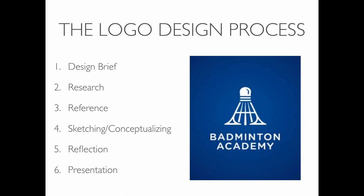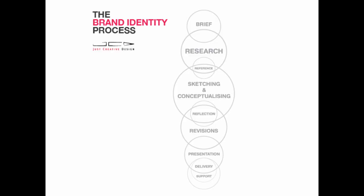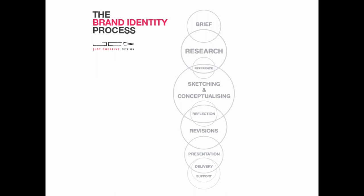The logo design process is similar to all the rest of the design processes we've talked about. We start with a design brief, then we get into research, followed by reference. Then it's the big sketching and conceptualizing phase — figuring out what the logo should be, trying out different ideas, reflecting back on whether it's working, and finally presenting it to the client. The biggest circle in the Venn diagram is sketching and conceptualization — that takes the bulk of the work.